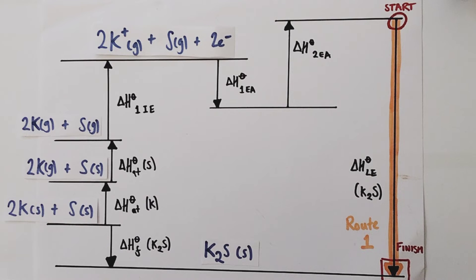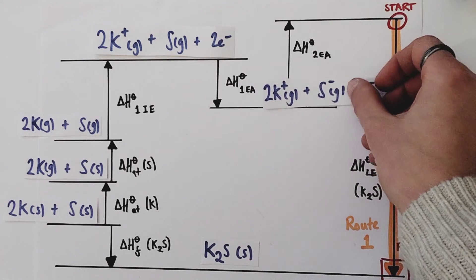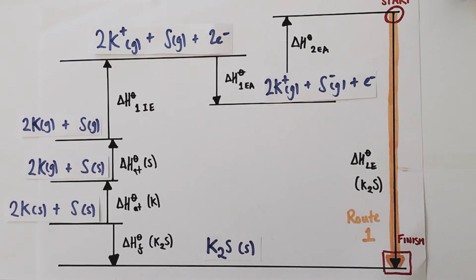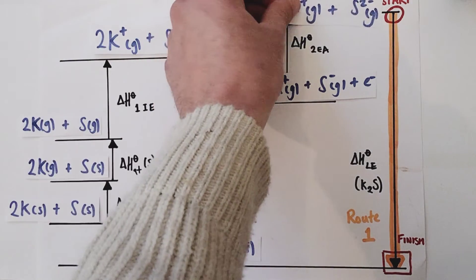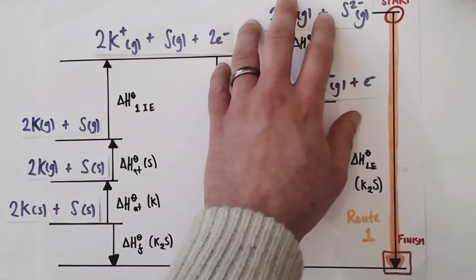Next, we're going to look at turning the sulphur atoms into sulphide ions. That's going to involve the first and second electron affinity. The first electron affinity is defined as the enthalpy change for the addition of one mole of electrons to one mole of gaseous atoms to form one mole of mononegative ions, making S⁻ sulphide ions. But sulphide ions actually form 2− ions because they can gain two electrons per atom, so we go on to the second electron affinity, which adds a second mole of electrons onto those S⁻ ions to form S²⁻ sulphide ions.